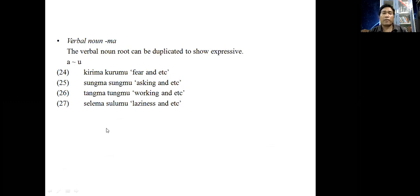And verbal noun. The nominalizer is ma. The verbal noun root can be reduplicated to show expressive, that is a to u. Here we also find in examples 24 to 27, there is change in the reduplicant where the verb is kiri and ma is the verbal noun marker. Kirima kurumu 'fear and etc.', songma songmu 'asking and etc.', tangma tungmu 'work and etc.', and selema sulumu 'laziness and etc.'